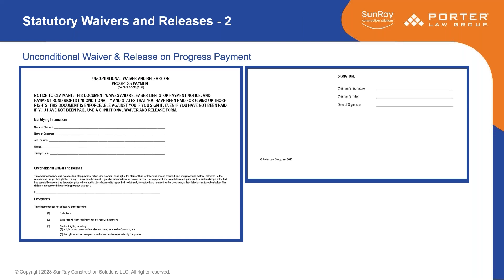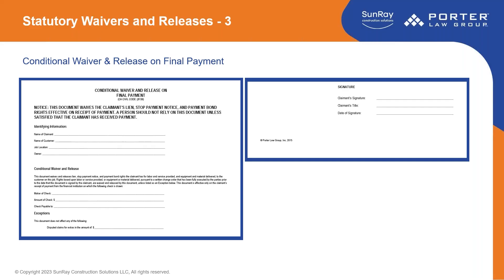When you get all the way to the end of the job, you get into the 'Conditional Waiver and Release on Final Payment.' Because the job is done, you're going to be getting your final payment, and this one is conditional — meaning you're going to get a check or have a check which was sent to you but has not yet cleared the bank. You fill out the information as before: your name, the name of the customer, the job location, who the owner is, then the release language, then the maker of the check, the amount of the check, and who the check is payable to. This should include all your retention.